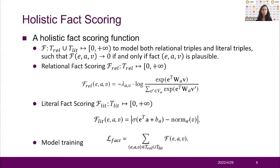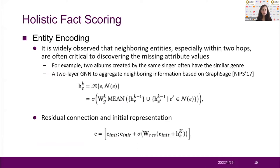The first component is holistic fact scoring, similar to most embedding-based KG completion methods. It uses a holistic fact scoring function f to model both relation triples and literal triples. This function takes a triple as input, and the output is near zero if and only if the fact (E, A, V) is plausible. We use all the triples in the KG to train the holistic fact scoring model. For entity encoding, it is widely observed that neighboring entities, especially within two hops, are often critical to discovering the missing attribute values. Therefore, we use a two-layer GNN to aggregate neighboring information based on graph structure.